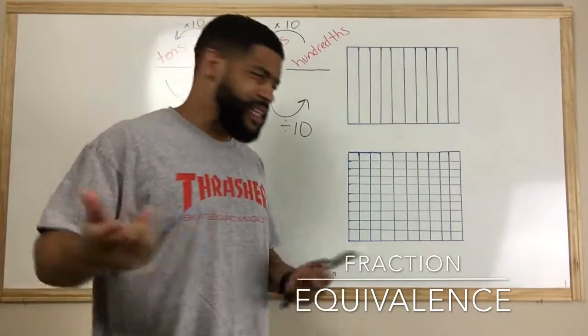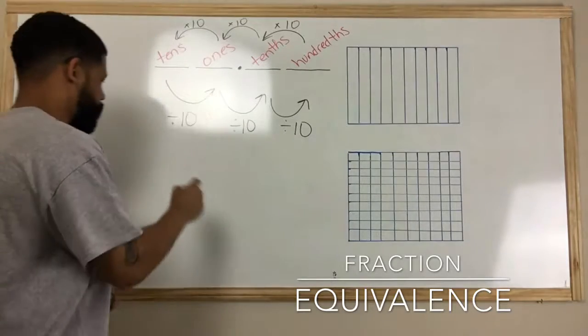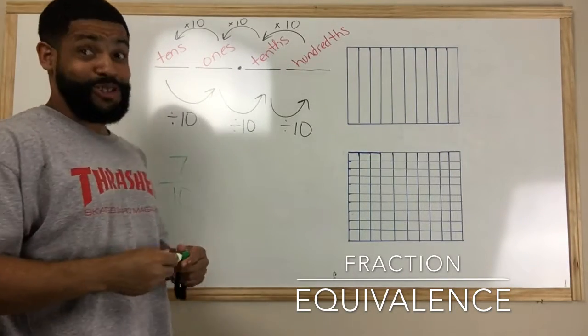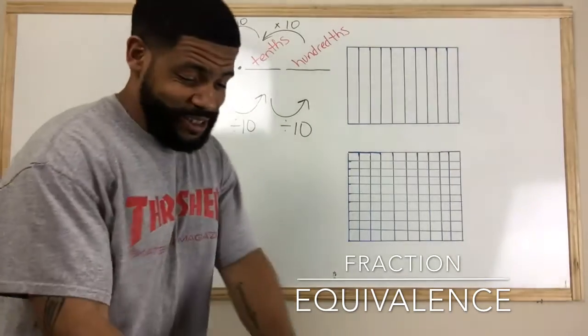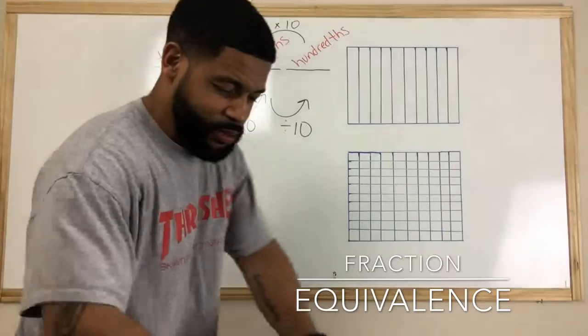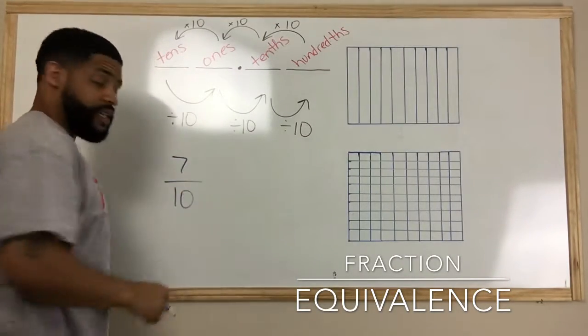All right, so let's go ahead and get right into an example. Let's say we have 7/10. As you can see, my marker is dead, so you probably can't see that. So let's go to another color, it's all good, we have solutions for that. So let's say we have 7/10 and we want to make a fraction that is equivalent to that but has a denominator of 100.